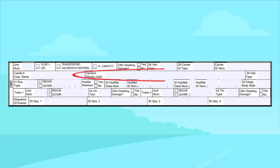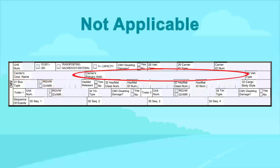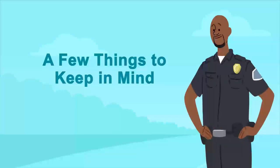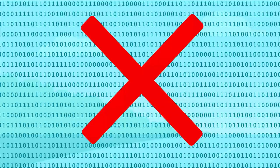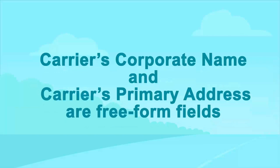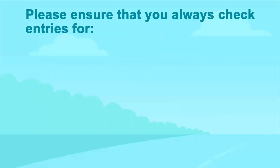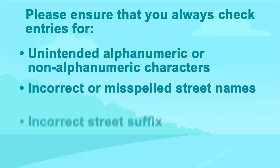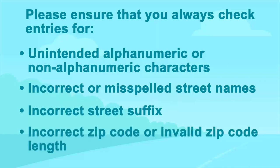Enter the carrier's corporate name and the carrier's primary address, which is the primary business address of the carrier. Both carrier's corporate name and carrier's primary address are free-form fields. Not applicable and unknown are not valid carrier's primary address street prefix values. It is essential to distinguish issues related to the recording of CMV information versus data entry errors in the online report submission platform. Please ensure that you always double-check entries for unintended alphanumeric or non-alphanumeric characters, incorrect street numbers, misspelled street names, incorrect street suffix, and incorrect or invalid zip code length.